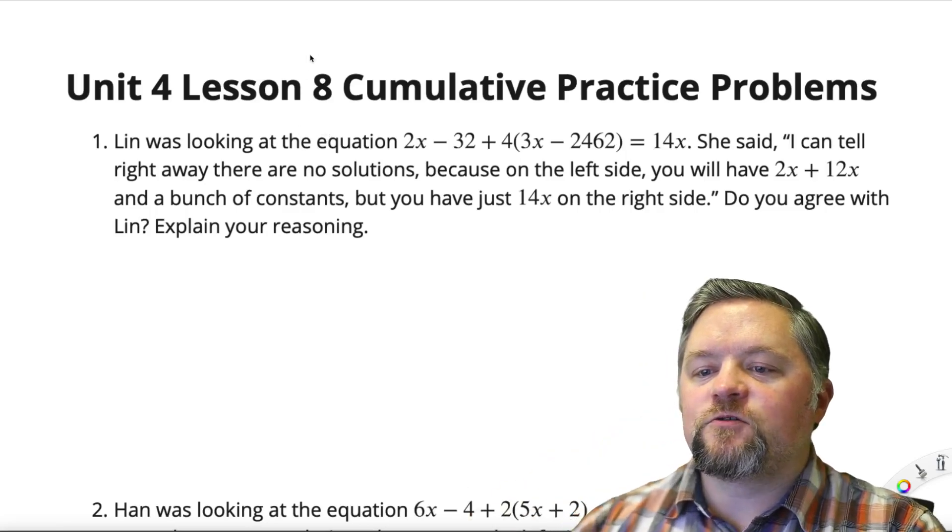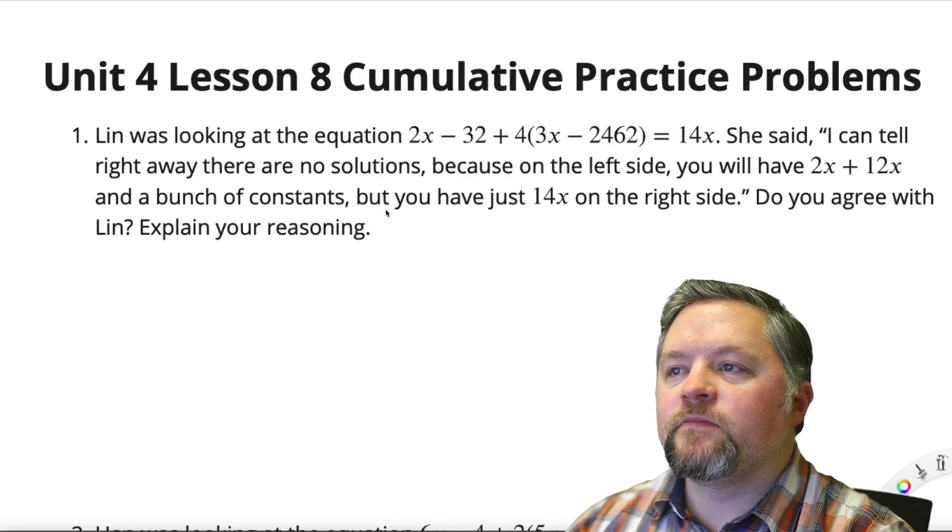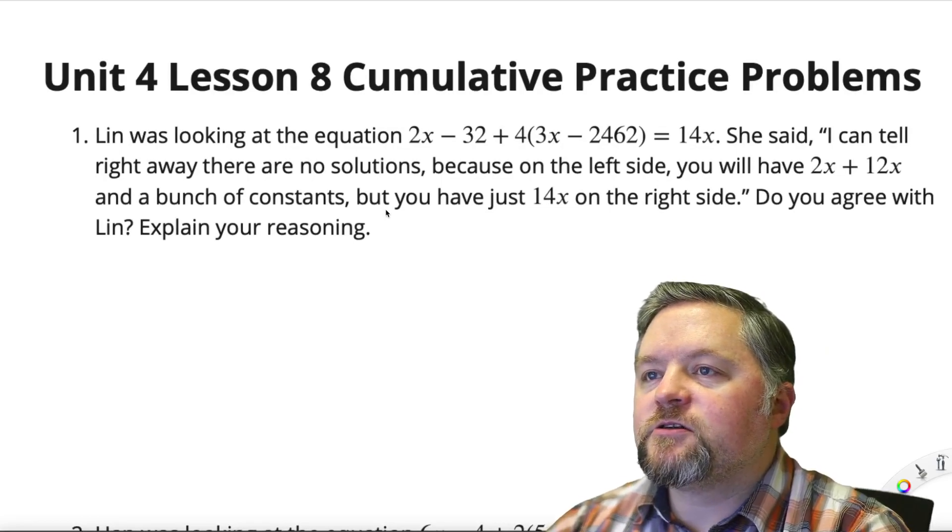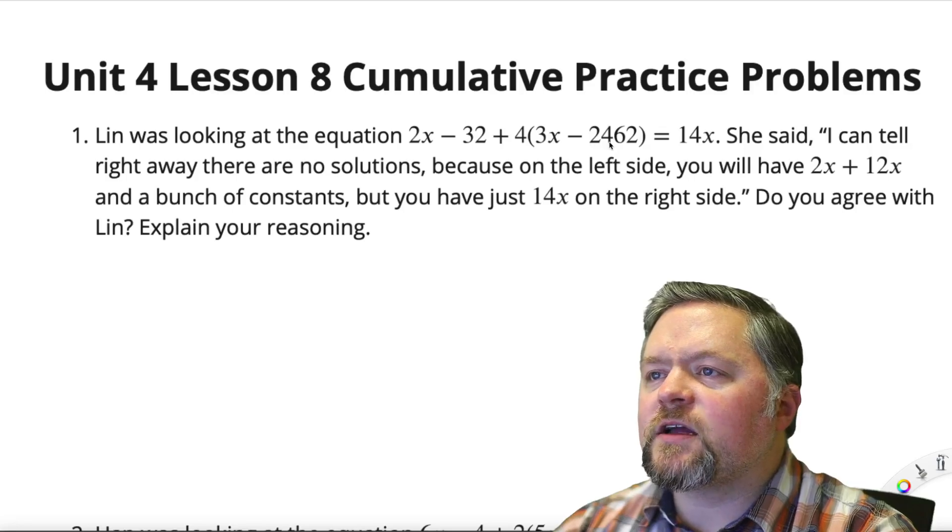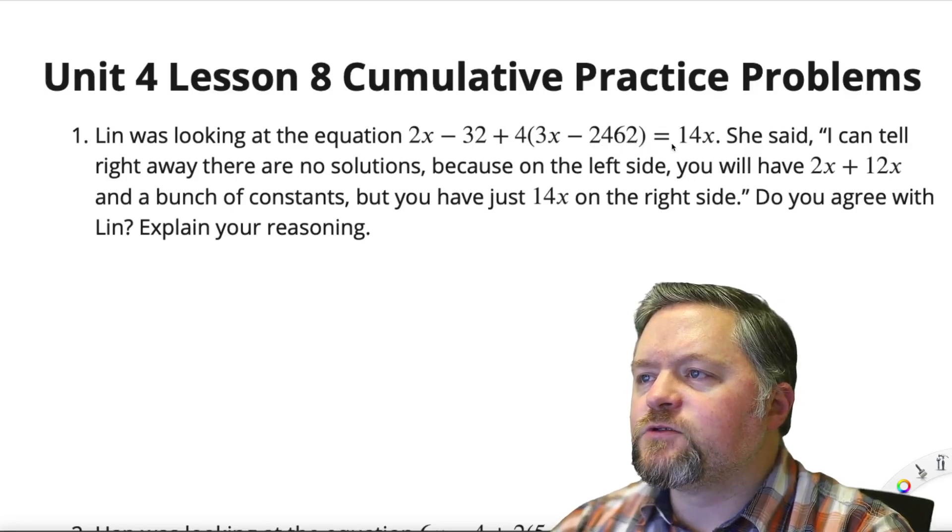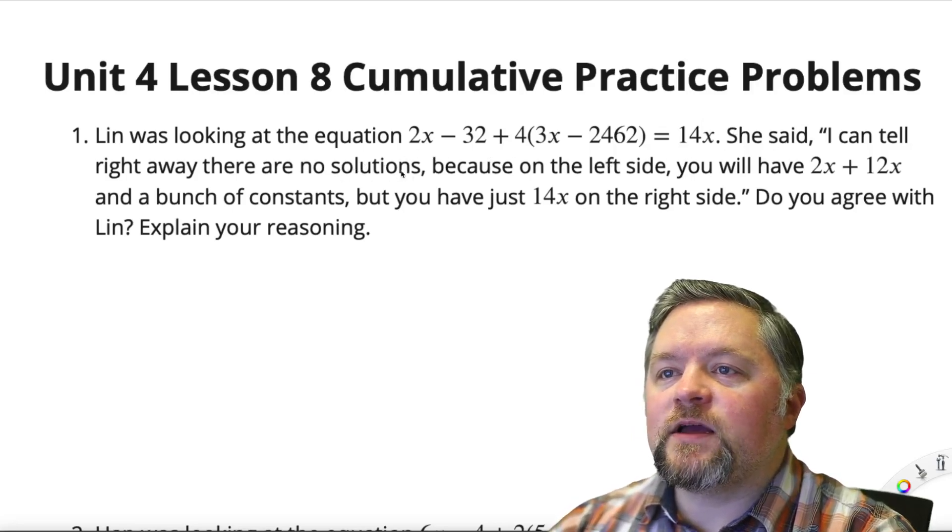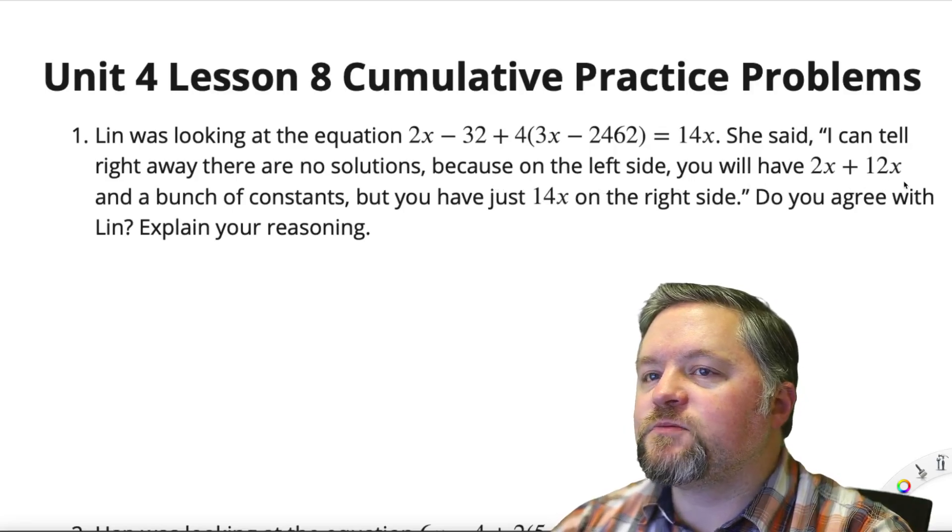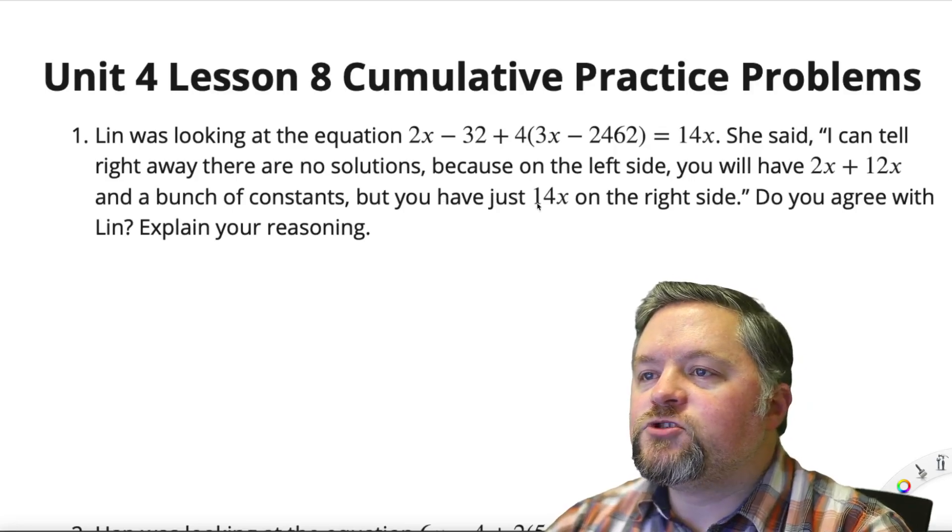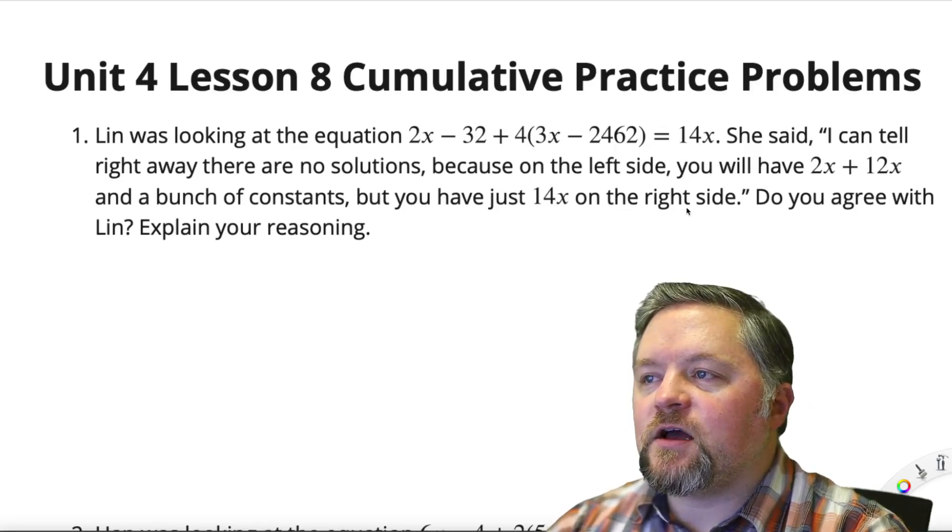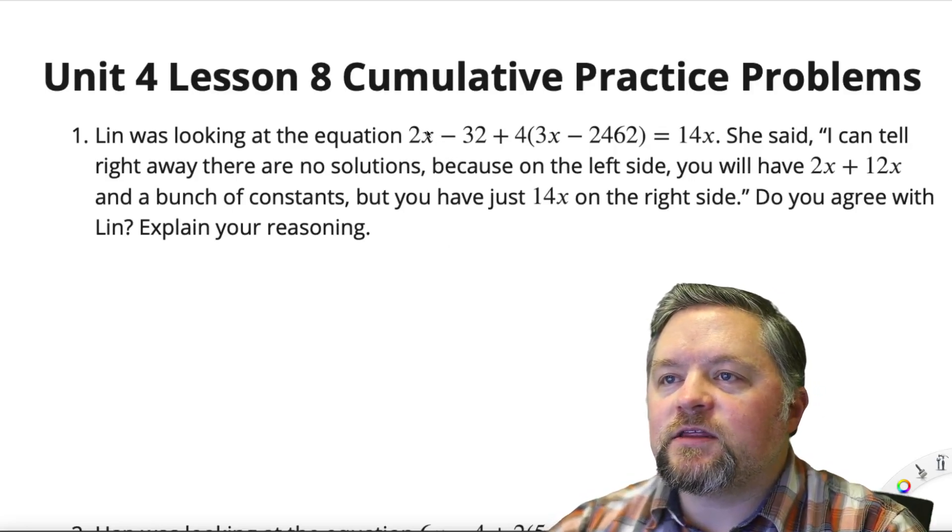Our first question here says, Lynn was looking at the equation 2x minus 32 plus 4 times the quantity 3x subtract 2462 equals 14x. She said, I can tell right away there are no solutions because on the left side you have 2x plus 12x and a bunch of constants, but you just have 14x on the right side. Do you agree with Lynn? Okay, well let's look at this.